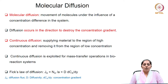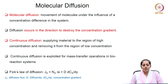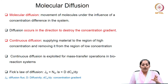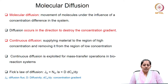We need to first understand how oxygen gets dissolved in the bulk liquid in a fermenter. Before that, let us do a brush-up on the phenomenon of molecular diffusion. Molecular diffusion involves movement of molecules under the influence of a concentration difference. Diffusion occurs in the direction to destroy this concentration gradient. Supplying material to the region of high concentration and removing it from the region of low concentration keeps the diffusion process continuous.